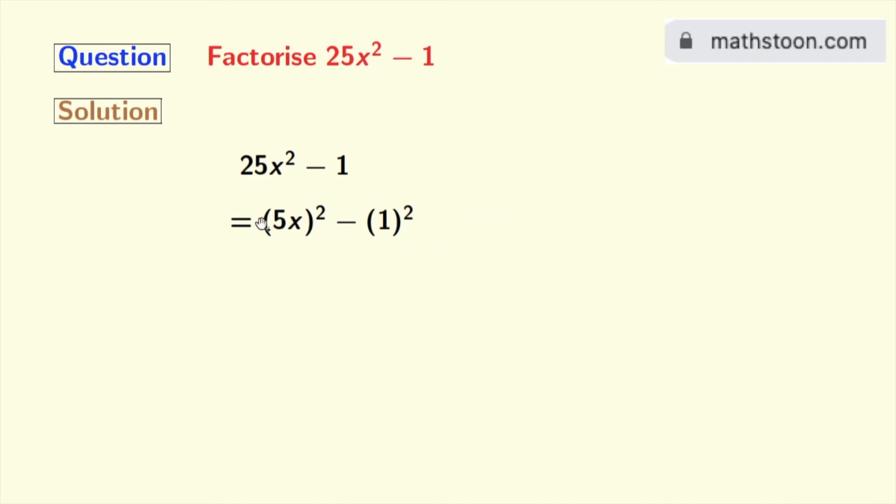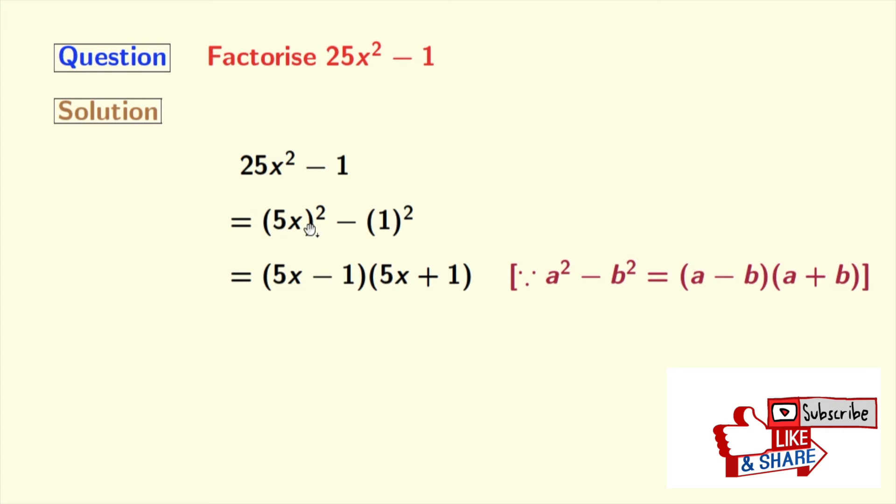Now look that this is in the form of a square minus b square, where a is 5x and b is 1. So we will now apply the formula of a square minus b square in this expression.